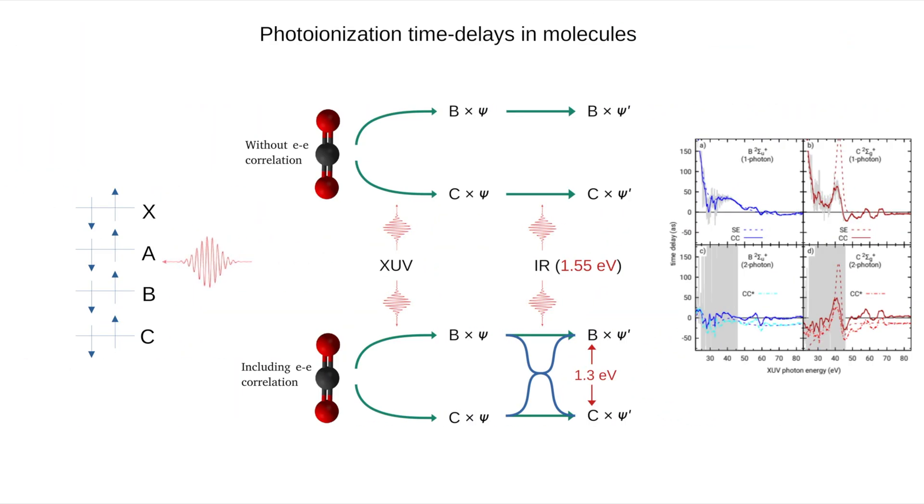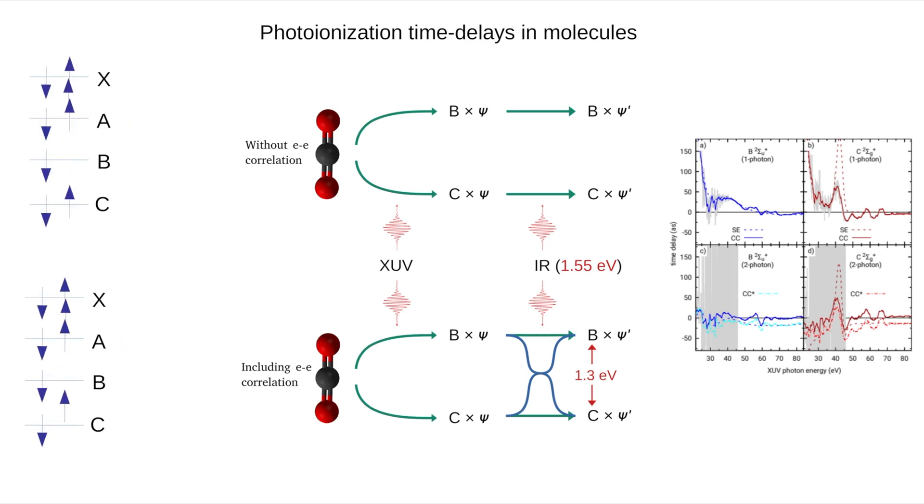Using ultra-fast and strong lasers, we can measure how long it takes for an electron to escape from a molecule when it's ionized. These times are measured in attoseconds. We are now able to perform calculations with and without electron correlation and to estimate delay introduced by the correlated motion of several electrons, as in this example for the CO2 molecule.